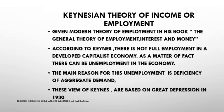Keynes argued that unemployment arises because aggregate demand is less than aggregate supply. Since aggregate supply is constant in the short period, to increase employment we must increase aggregate demand. Aggregate demand has two components — consumption plus investment. Consumption is constant in the short period, so we can increase investment. But during a depression, the private sector is not keen to invest, so government intervention is required.